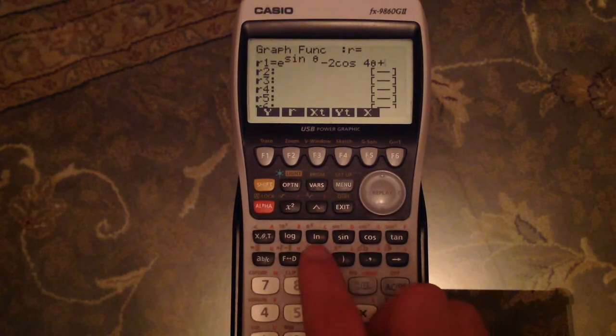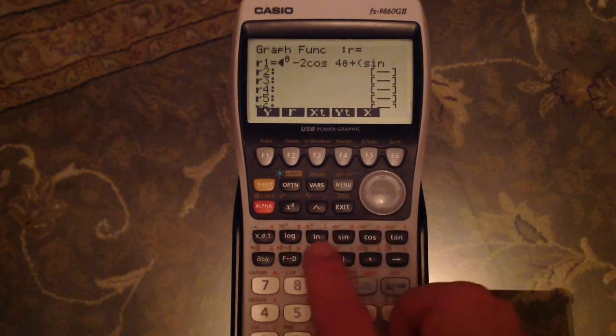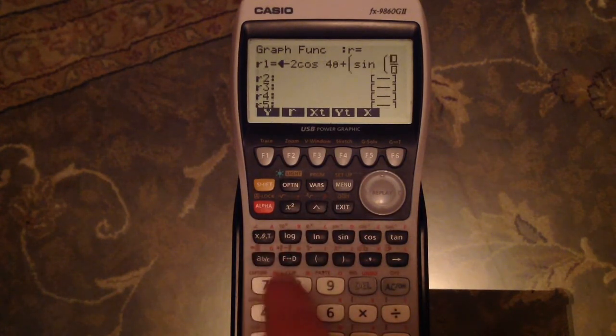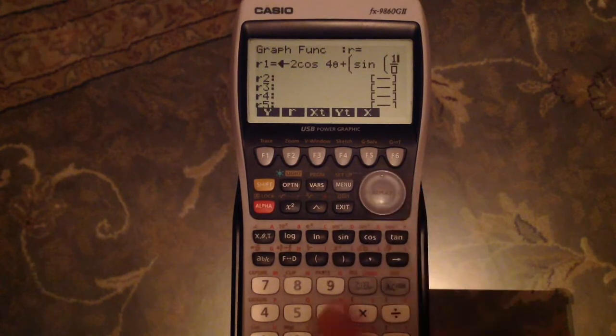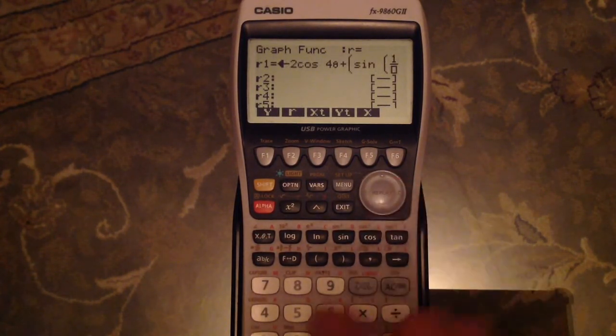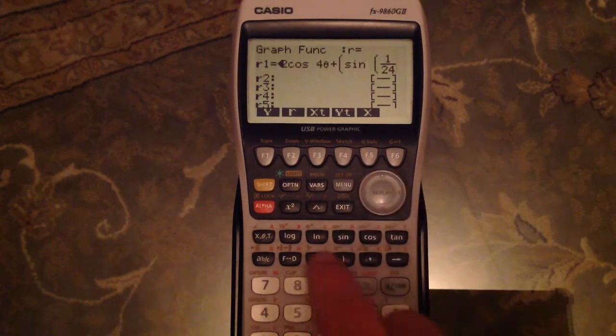Plus, in brackets, sin of, using the fraction button, 1 over 24. Oops. Over 24. Open brackets again.